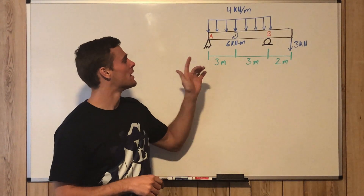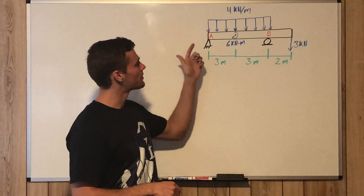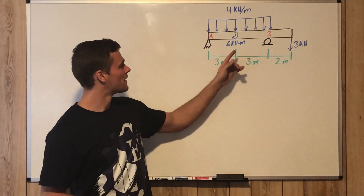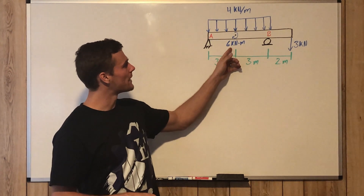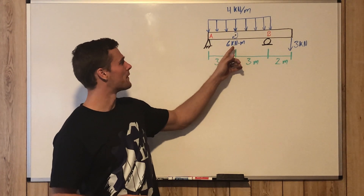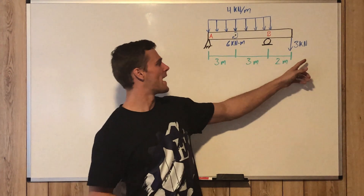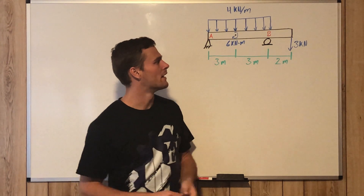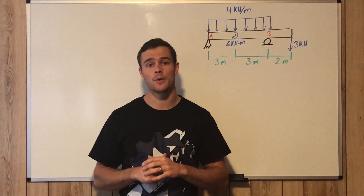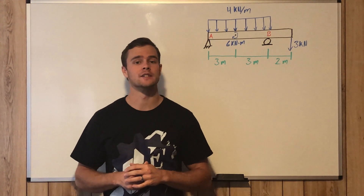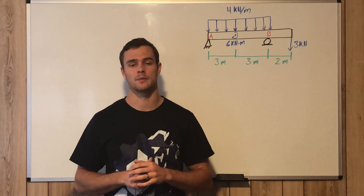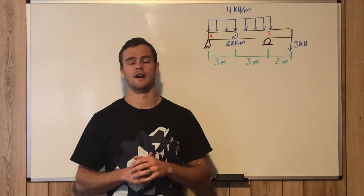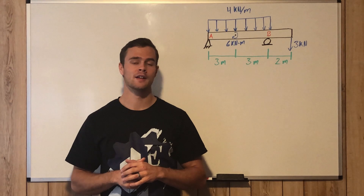Here we have a beam with a distributed load across the top of four kilonewtons per meter, a point moment in the middle of six kilonewton meters, and a point load at the end of three kilonewtons. What we need to do is solve for the shear and moment diagrams, and that's what we're going over in this video.